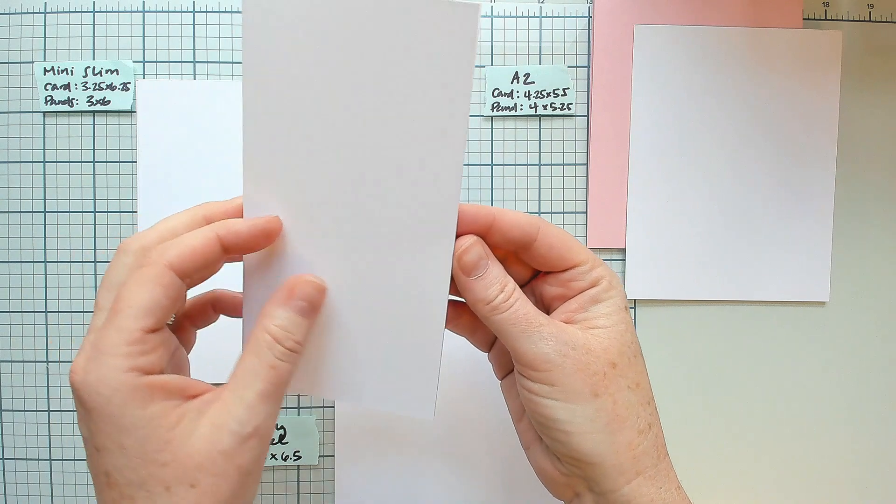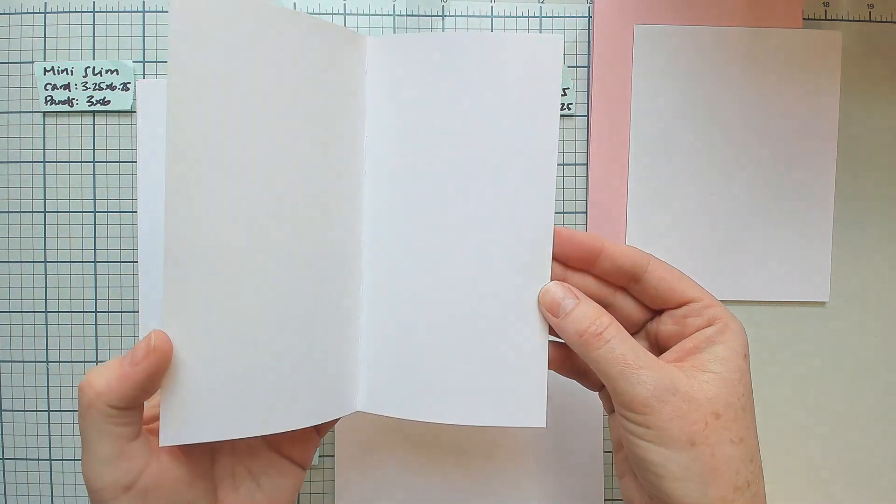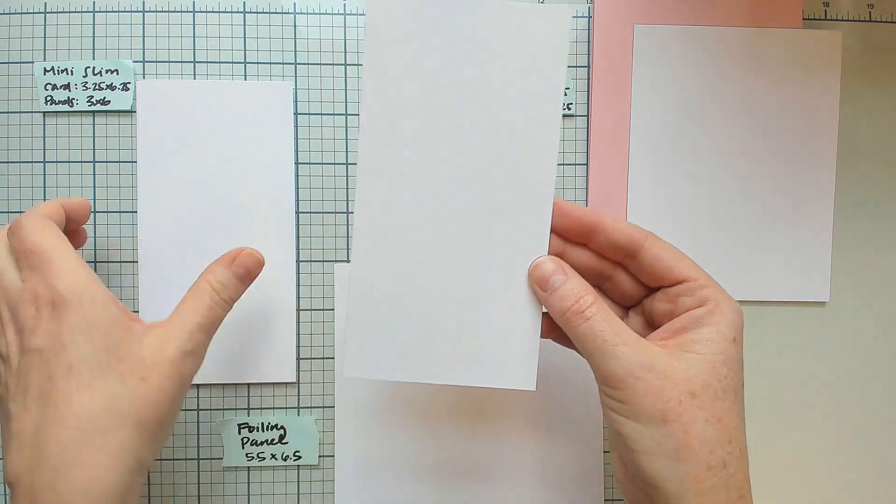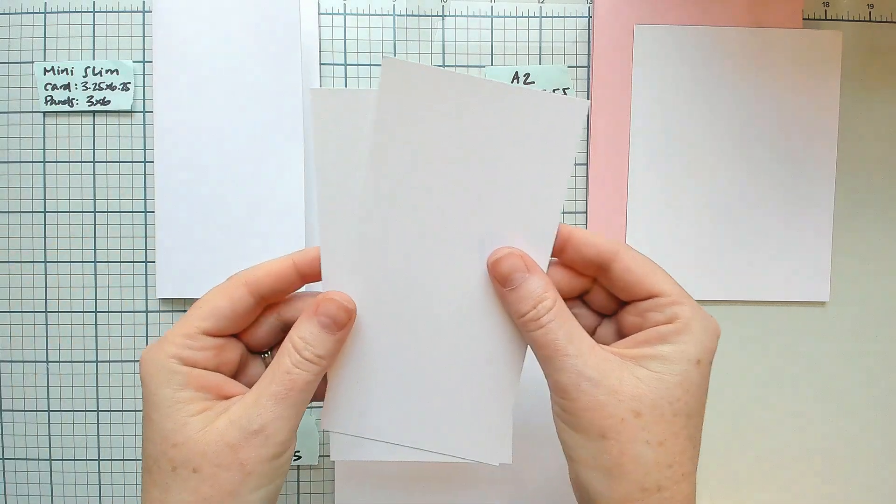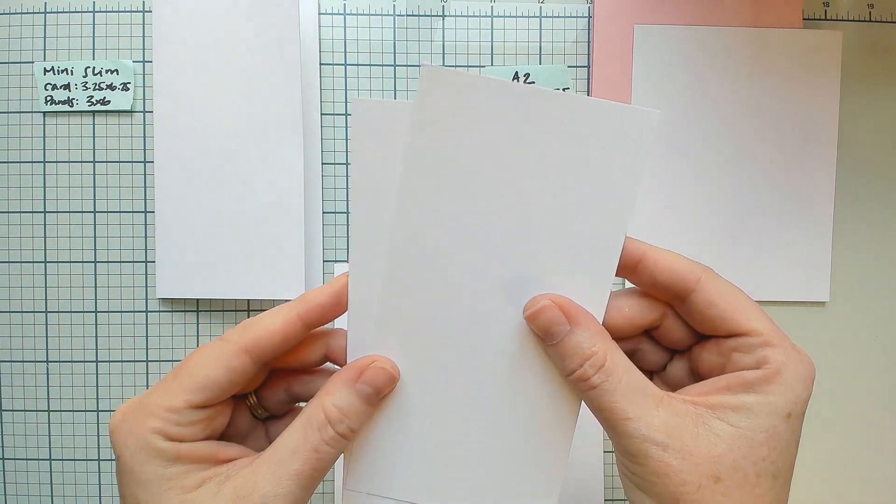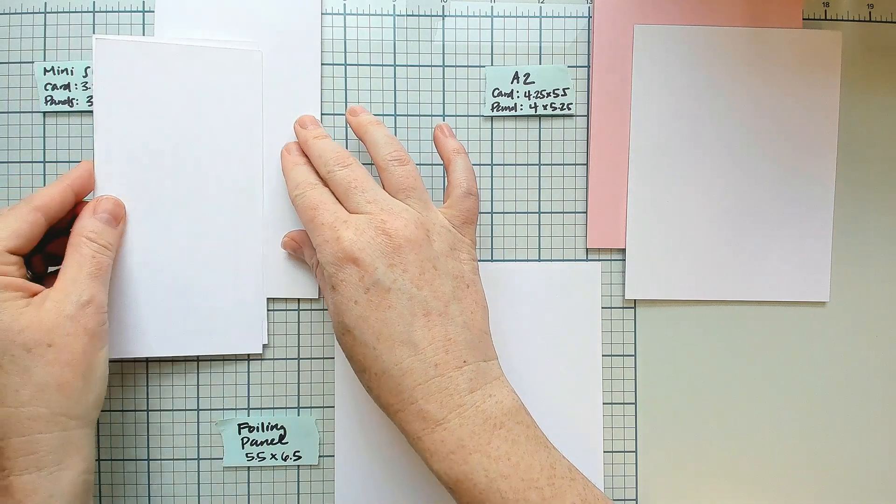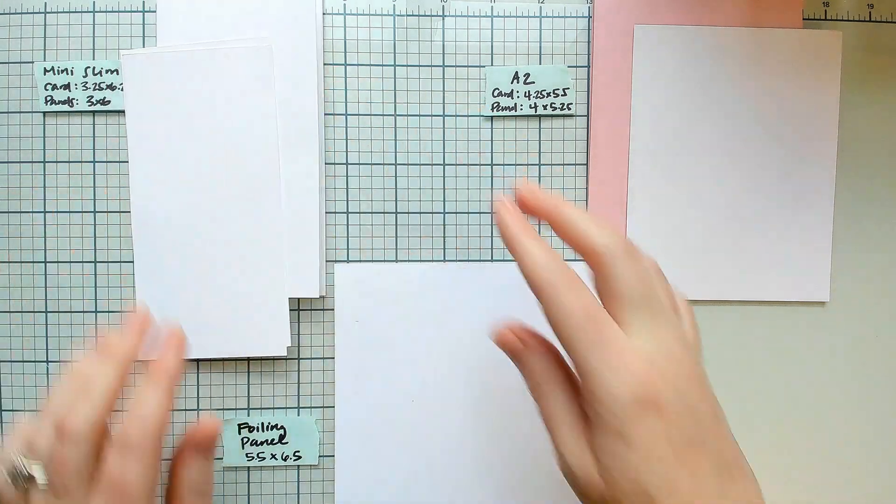For your mini slimline, I'll want you to prep a 3.25 by 6.25 inch card base and two panels of 3 by 6 inch white cardstock. The mini slimline will all start out in white cardstock.